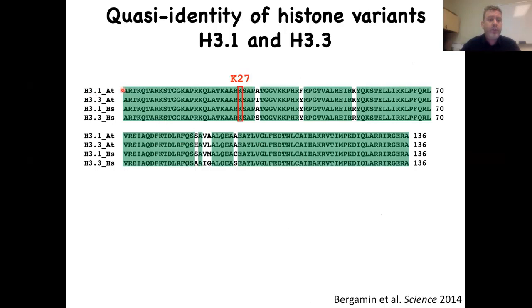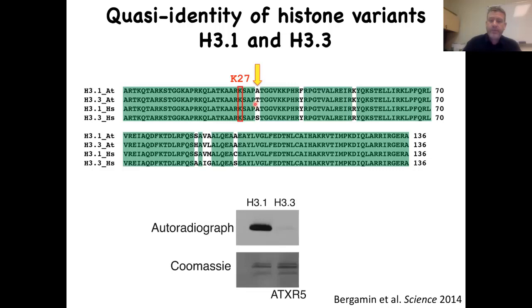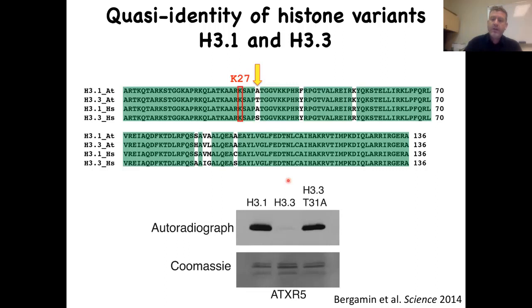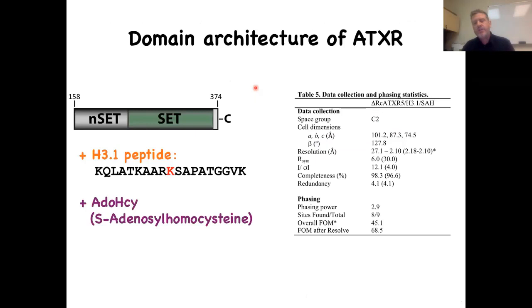We asked: if we mutate that threonine to an alanine in H3.3, are we gaining methylation? Indeed, substitution of that threonine to alanine restores methylation. Just this single A-to-T switch is playing a major role in the specificity of ATXR5 for H3.1. Being a structural biology lab, we crystallized the enzyme — the construct corresponding to the SET domain and NSAID region — with the peptide and cofactor, and solved the crystal structure at very high resolution. In green, the SET domain; in gray, the NSAID region; the histone H3.1 peptide colored in orange.